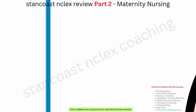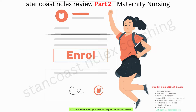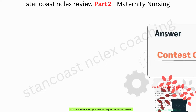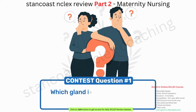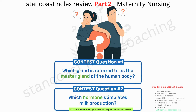Before we proceed to the next part of this topic, there is a contest in which you can win $1,000 or enroll for free in our online course. Simply participate by answering contest questions asked throughout this video. Contest question 1: Which gland is referred to as the master gland of the human body? Contest question 2: Which hormone stimulates milk production? Contest question 3: Which vitamin deficiency leads to night blindness? Please write your answers in the comment box below.